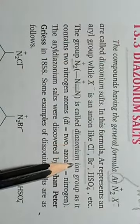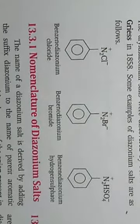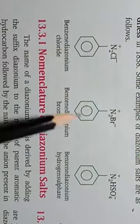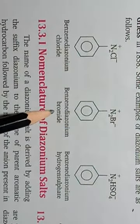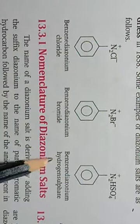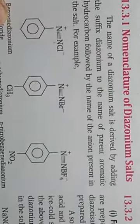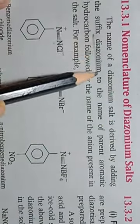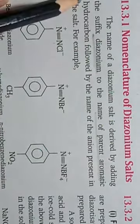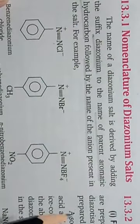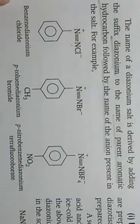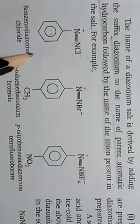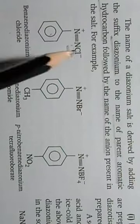Examples of diazonium salts include: benzene diazonium chloride, benzene diazonium bromide, and benzene diazonium hydrogen sulfate. For nomenclature, we use the suffix 'diazonium' added to the name of the parent aromatic hydrocarbon, followed by the name of the anion — for example, benzene + diazonium + chloride.